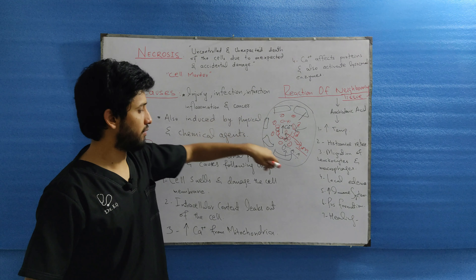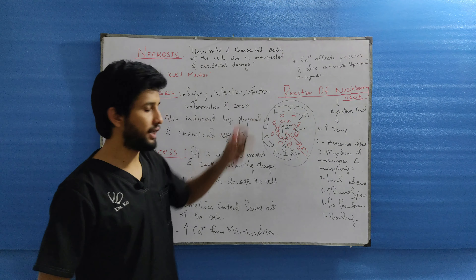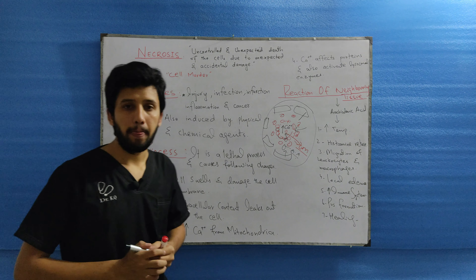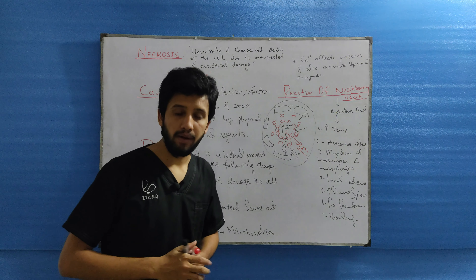We were discussing cell death, which occurs by two main processes: apoptosis and necrosis. We have covered apoptosis, and today we are discussing necrosis. Necrosis is an uncontrolled and unexpected death of the cell, which occurs by accidental damage or unexpected events. It is called a cell murder.